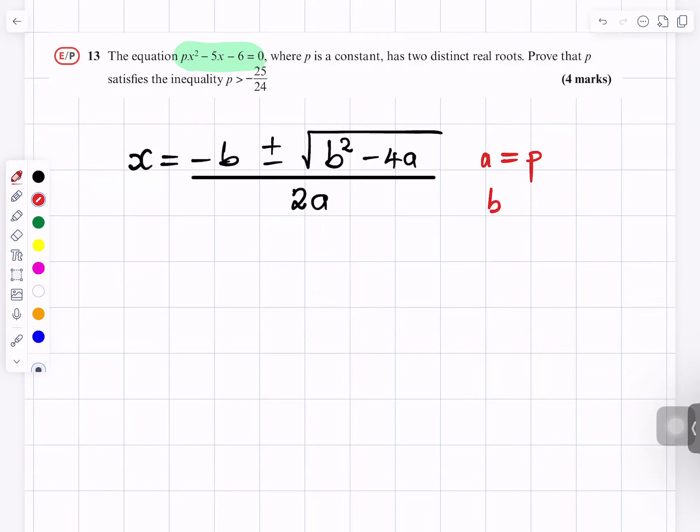Yes. And what is B equals to? 5x. 5. No, minus 5. Yeah, minus 5, sorry. What is C equals to? Minus 6. Minus 6.